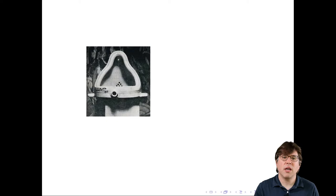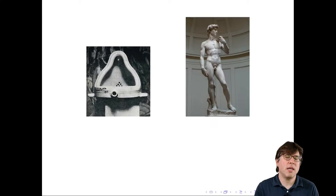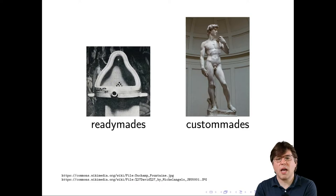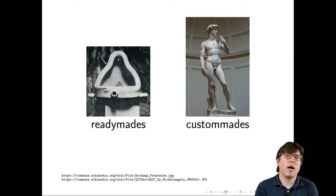If we had to come up with another style of art to illustrate the type of data more common in social science, it would be David by Michelangelo. When Michelangelo wanted to create David, he didn't look around for something that sort of looked like David — he labored in marble for three years to create it. That is an example of custom-made. So we have ready-made, which is more illustrative of the style of data scientists, and custom-made, which is more illustrative of the style of social scientists. Increasingly in computational social science, we will see combinations of these two styles, just as Blumenstock and his colleagues did.